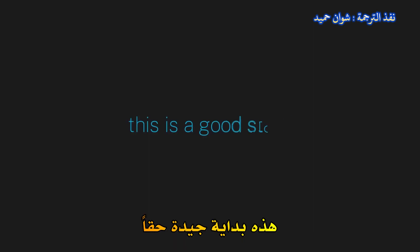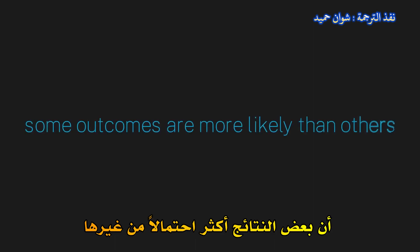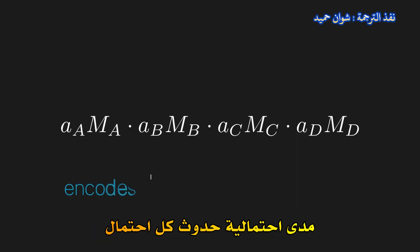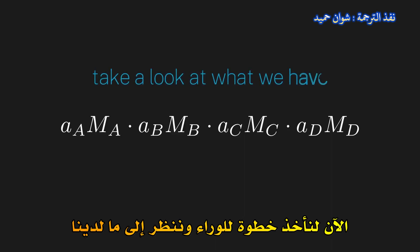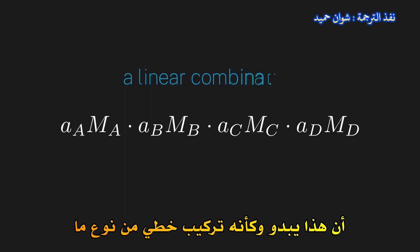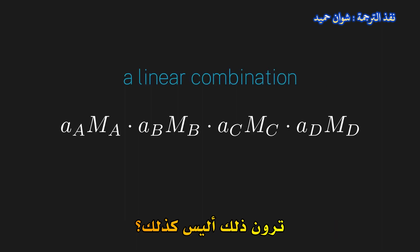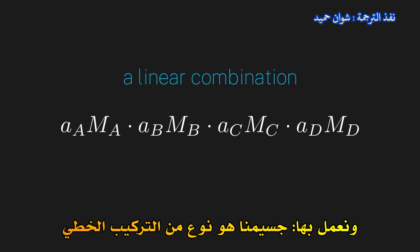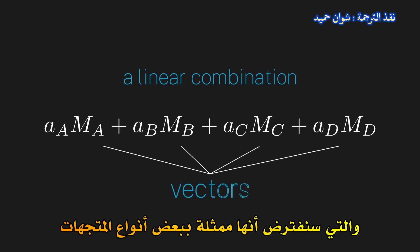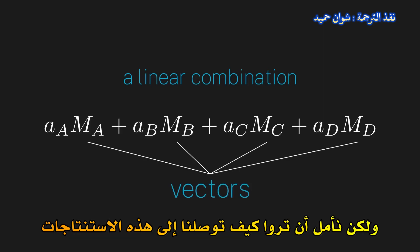This is a really good start. Next, we also need to somehow codify the idea that some outcomes are more likely than others. So each mathematical object also needs to carry with it the probability of getting that particular outcome. The simplest way to do this is to just add a number in front of each mathematical object — a number that somehow encodes how likely each possibility is to occur. Now let's take a step back and look at what we have. Having studied a number of mathematical structures in your past, hopefully you begin to see that this looks suspiciously like a linear combination of some sort. This is our only lead, so let's go ahead and run with it. Our particle is some sort of linear combination of all outcome possibilities, which we'll assume are represented by some sort of vector.